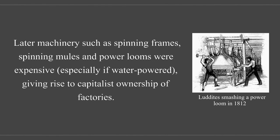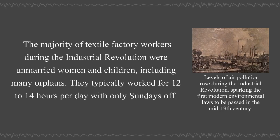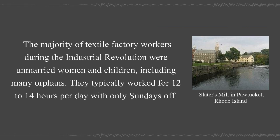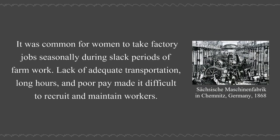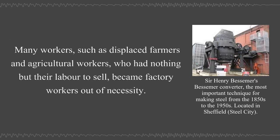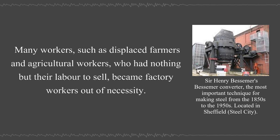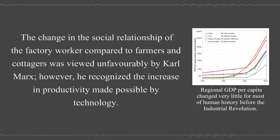Later, machinery such as spinning frames, spinning mules, and power looms were expensive, especially if water-powered, giving rise to capitalist ownership of factories. The majority of textile factory workers during the Industrial Revolution were unmarried women and children, including many orphans. They typically worked for 12 to 14 hours per day, with only Sundays off. Lack of adequate transportation, long hours, and poor pay made it difficult to recruit and maintain workers. Many workers, such as displaced farmers and agricultural workers who had nothing but their labor to sell, became factory workers out of necessity. The change in the social relationship of the factory worker compared to farmers and cottagers was viewed unfavorably by Karl Marx, though he recognized the increase in productivity made possible by technology.